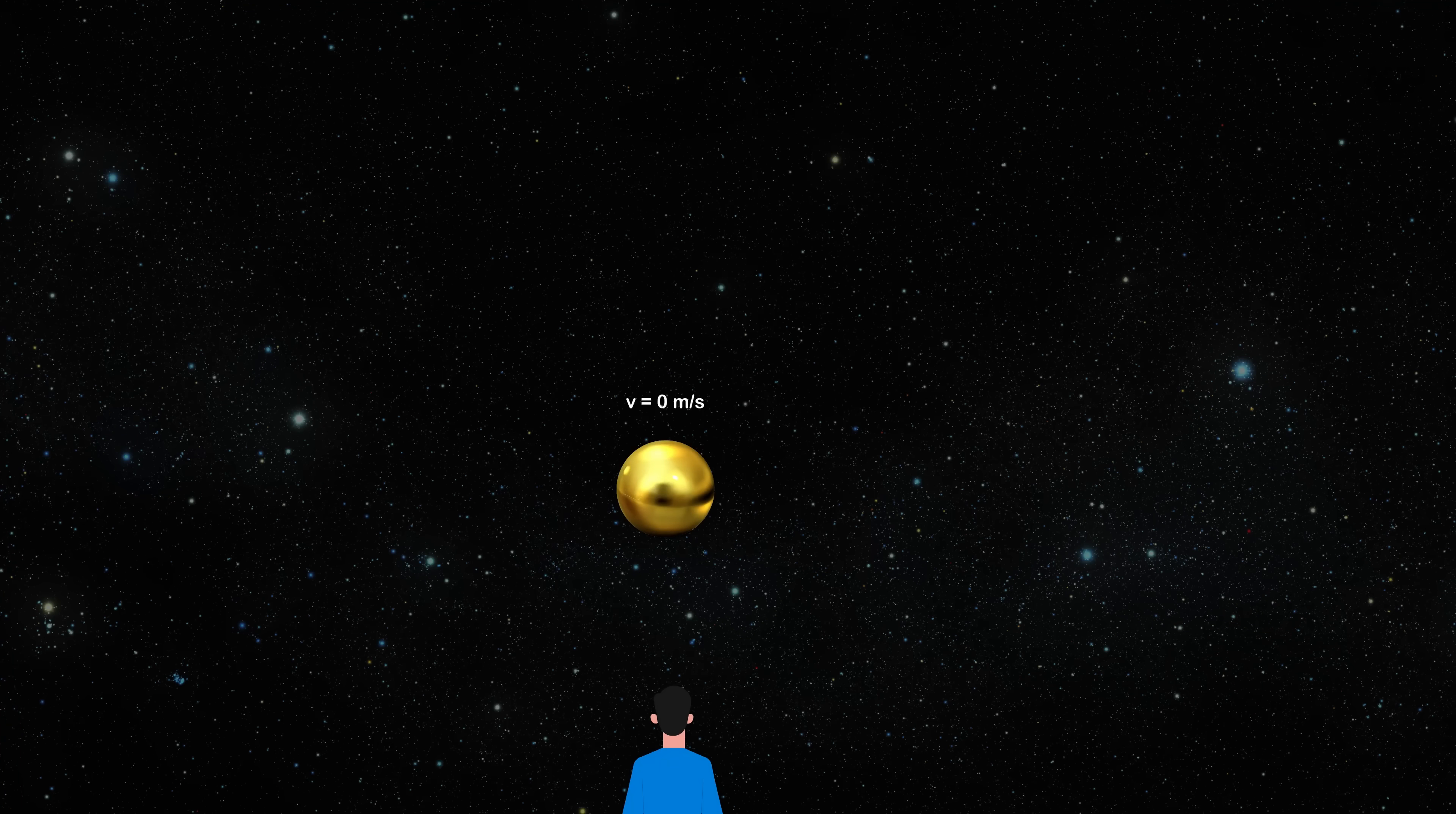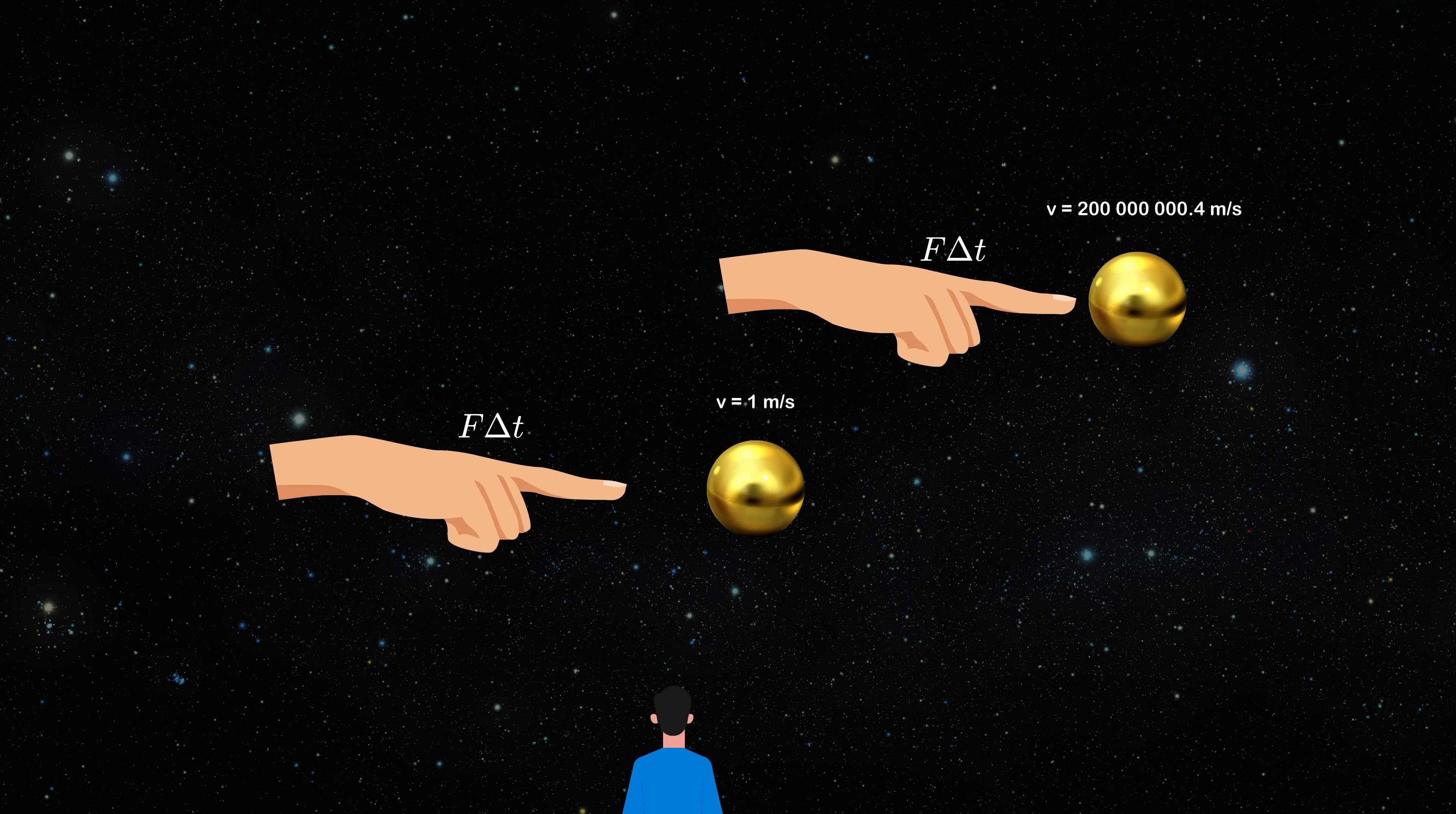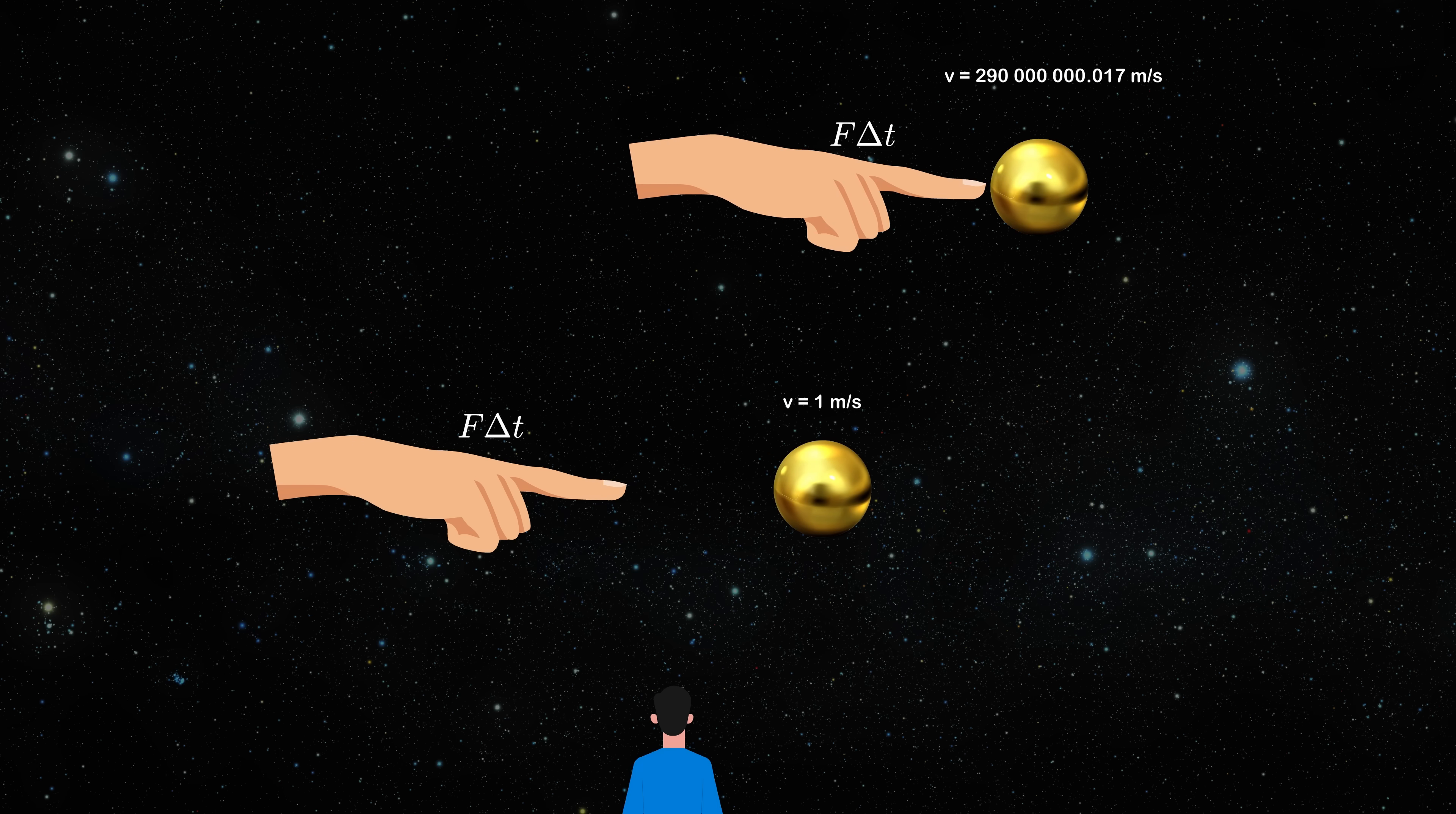If you have a stationary ball and you push it so that the ball accelerates to 1 meters per second, then if the ball is moving at a very high speed, for the same observer, the same push would give less than 1 meters per second. Because you can only approach the speed of light, but never cross. So the closer you are to the speed of light for a certain observer, the harder it will seem to push the object.